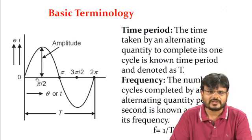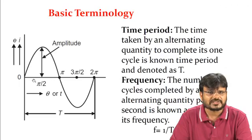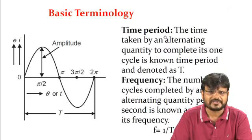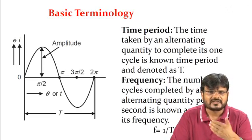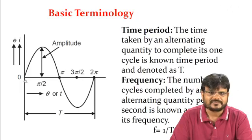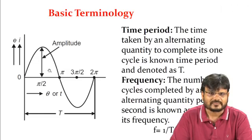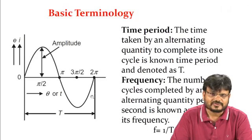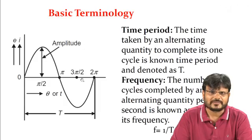Now we understand the terminology associated with the sinusoidal waveform. First is time period: the time taken by an alternating quantity to complete one cycle is known as the time period. One cycle goes from 0 to maximum, maximum to 0, 0 to negative maximum, and negative maximum back to 0. The time taken to complete this is denoted by capital T.